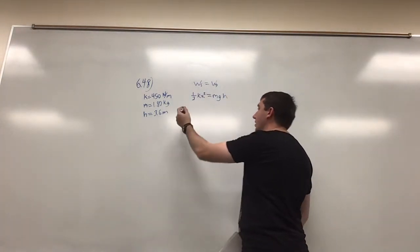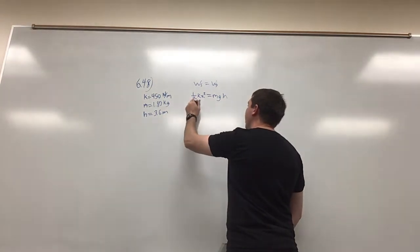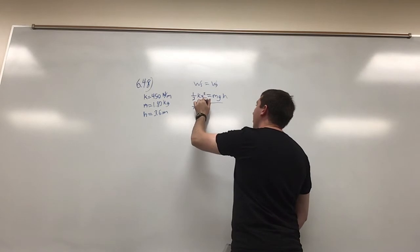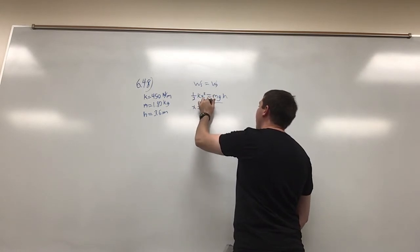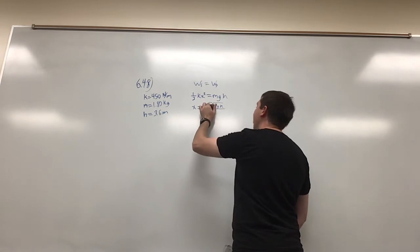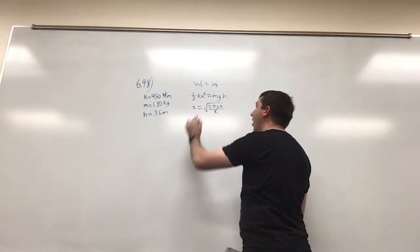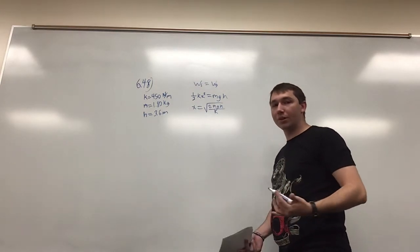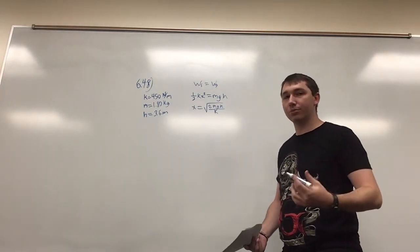So then we're just solving for x. We know that x is going to be equal to the square root of 2 times the mass times gravity times the height divided by the spring constant. That's just rewriting that equation so that when we plug the numbers in we get the distance that the spring is compressed.